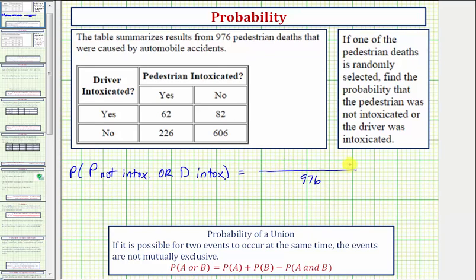And now we want to determine the favorable number of ways of selecting one death where the pedestrian was not intoxicated or the driver was intoxicated. Looking at the table, this column represents the number of deaths where the pedestrian was not intoxicated. So these two values here represent favorable ways of selecting one death where the pedestrian was not intoxicated.